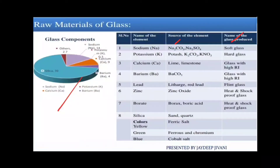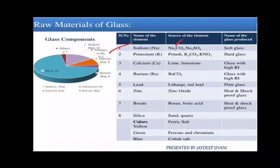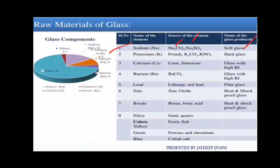The first element is sodium. Sodium is sourced from Na2CO3 — that is soda — sodium sulfate, and sodium silicate. Sodium is used in the manufacturing of soft glass.